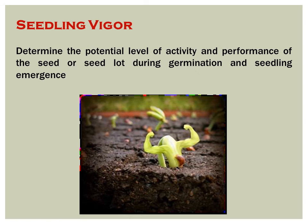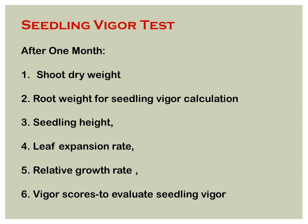Now we look at seedling vigor. Vigor means how fast seeds are germinating. It determines the potential level of activity and performance of the seed or seed lot during germination and seedling emergence. After sowing, you observe how fast seeds germinate — that is your seedling emergence. Parameters for seedling vigor calculation include shoot dry length, shoot dry weight, root weight, seedling height, leaf expansion rate, and relative growth rate.